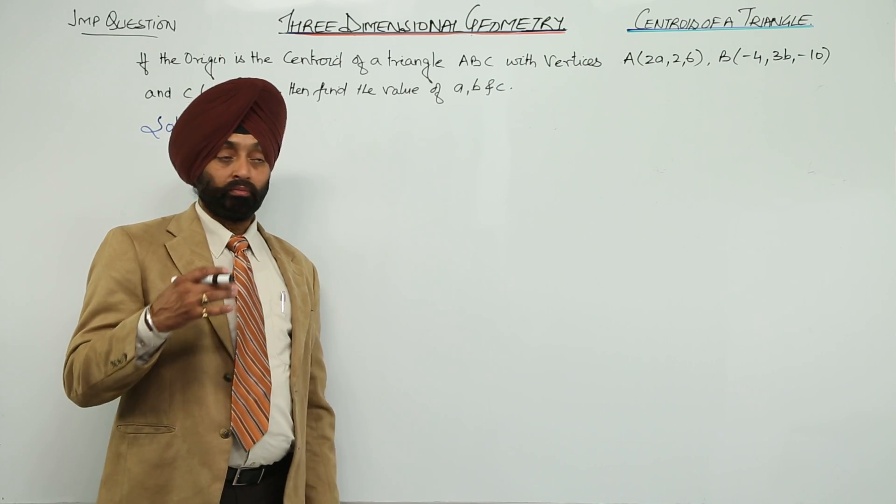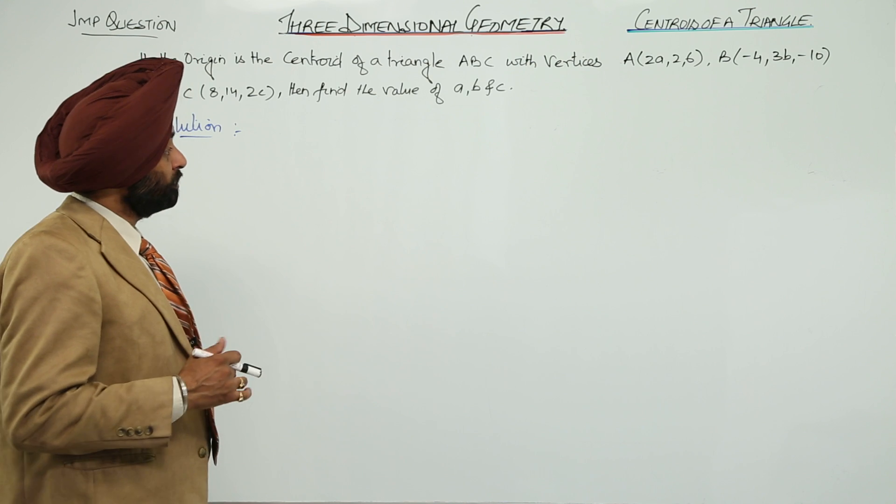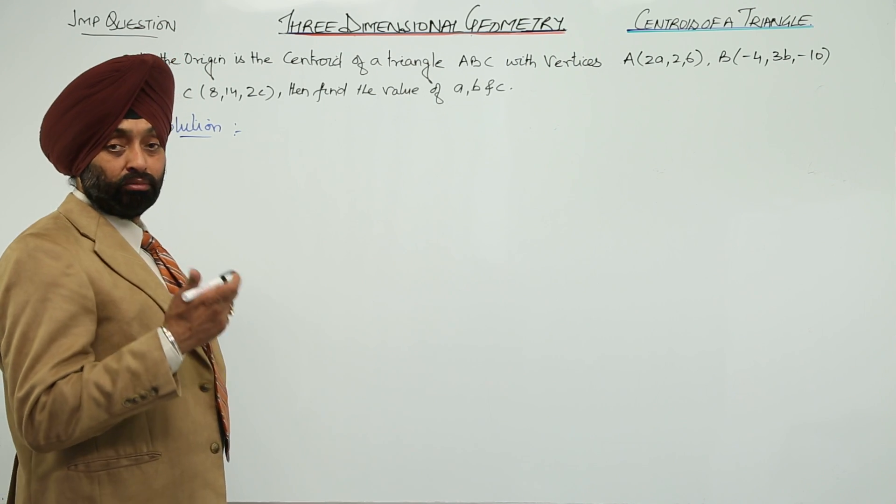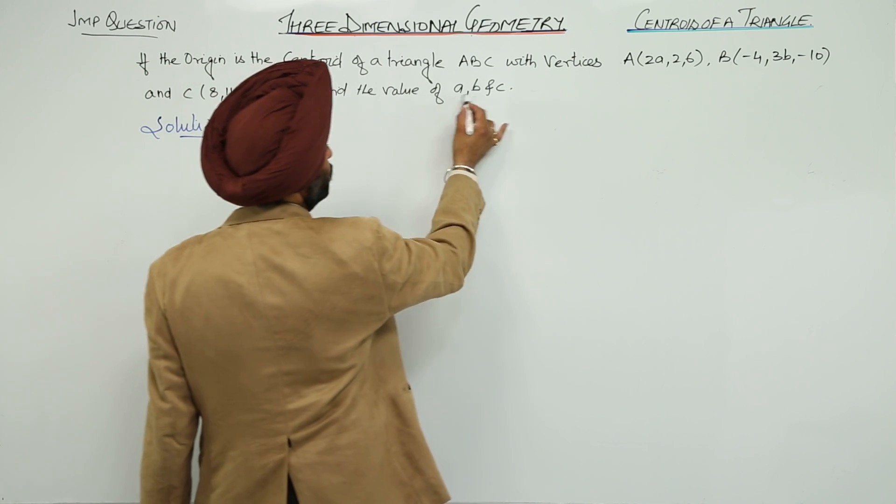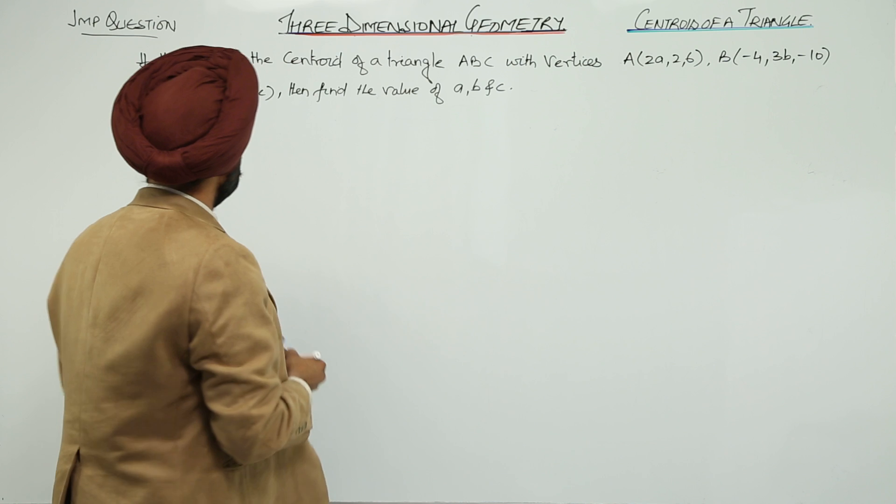Now, in this question vertices along with their coordinates are given of triangle ABC and we have to find the values for small letters A, B and C which are in the coordinates.